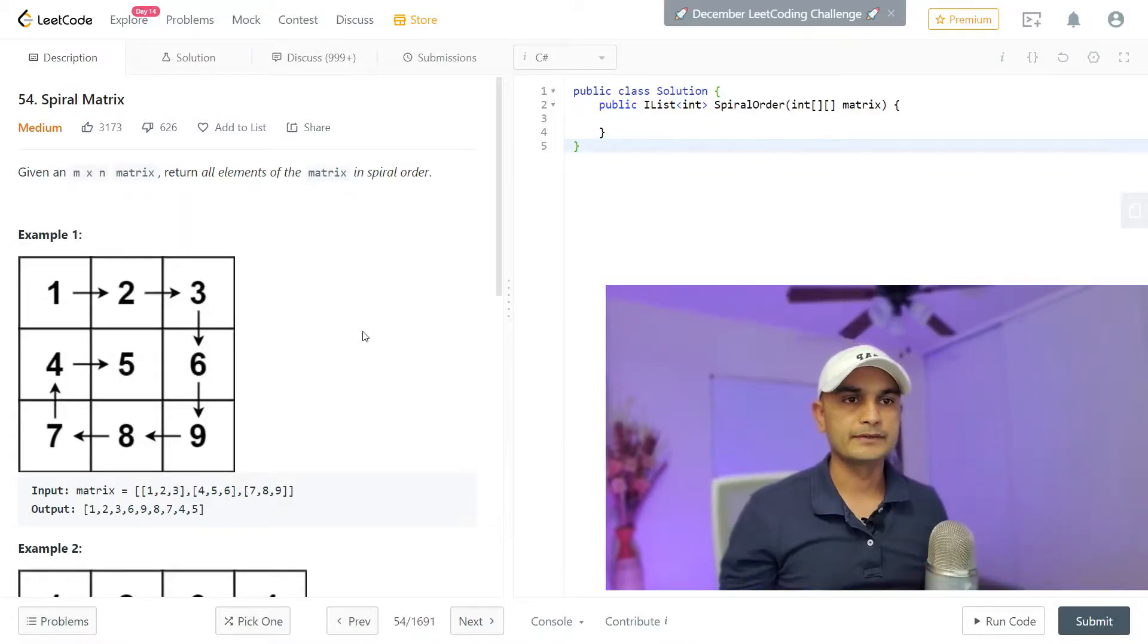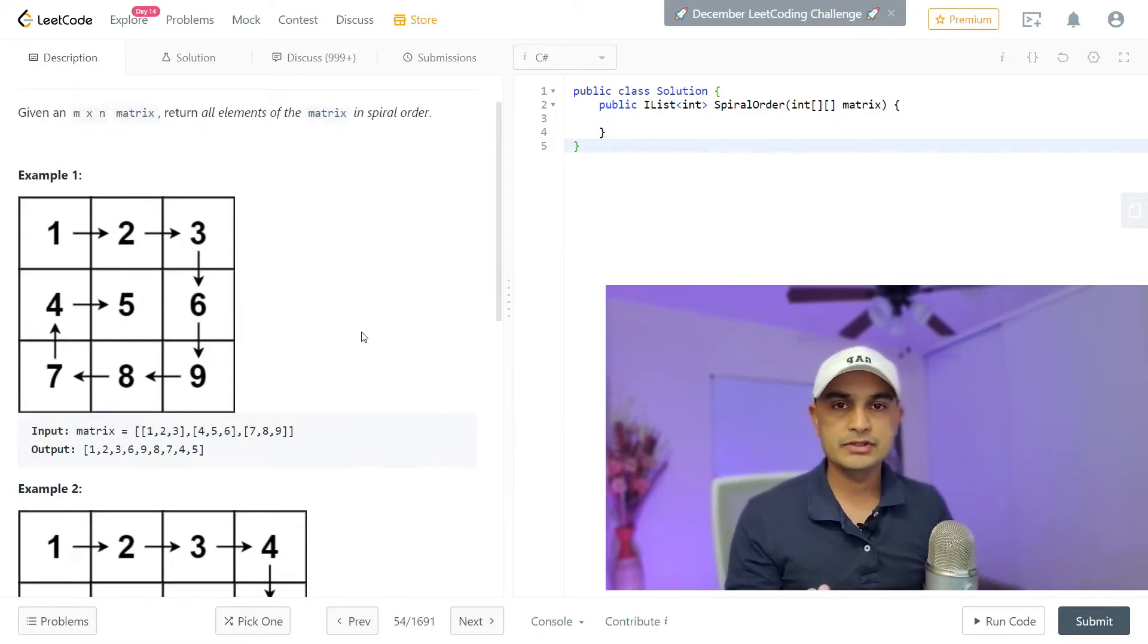This is our problem description. We have an m by n matrix with numbers and all we have to do is spirally traverse that matrix. So a straightforward problem, the diagram is self-explanatory.